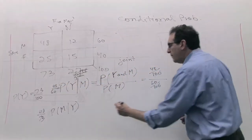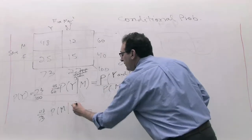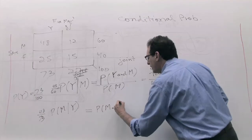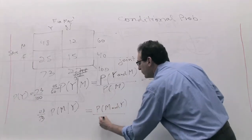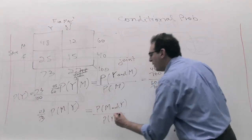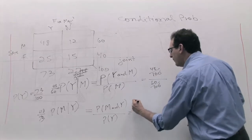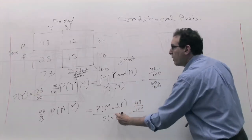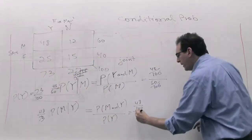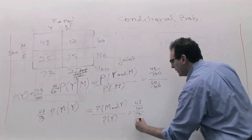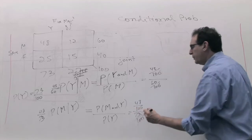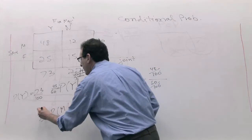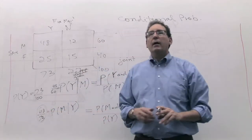Doing this one more time: what is the chance of M given Y? The formula says break it into M and Y — the joint probability — divided by P(Y). That's 48 divided by 100 on top, and there are 73 Ys, so 73 out of 100 on the bottom. The 100s cancel, and you're left with 48 divided by 73.